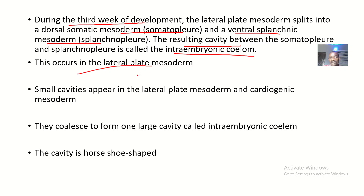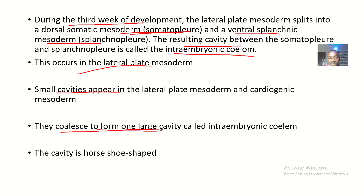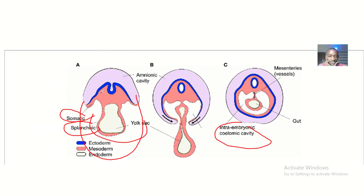The lateral plate mesoderm splits to give structures that come together to form a cavity, and that cavity is the intra-embryonic coelom. Small cavities appear in the lateral plate mesoderm and cardiogenic mesoderm. These small cavities coalesce to form one large cavity called the intra-embryonic coelom, which is horseshoe-shaped. So that's the formation of the intra-embryonic coelom.